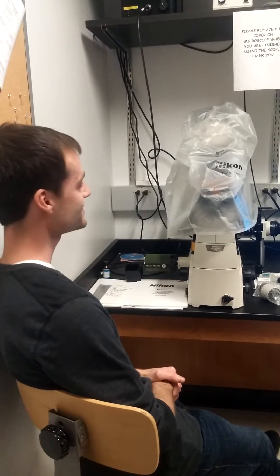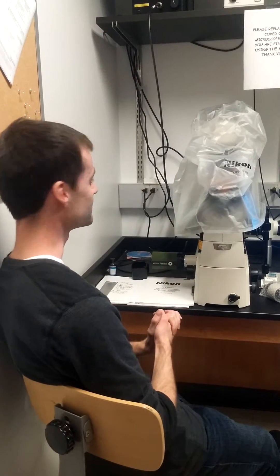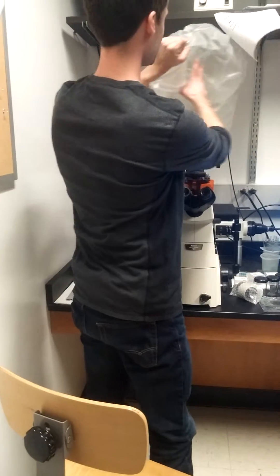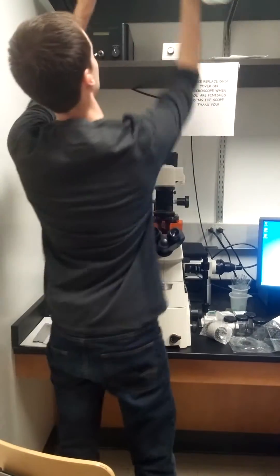Today we're going to be learning how to use the inverted fluorescence microscope. First thing to do is remove the dust cover. Carefully lift that off and set it aside.